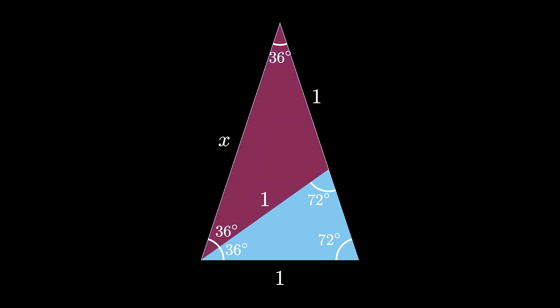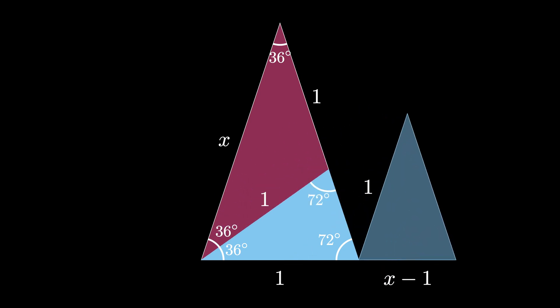Putting these two results together, we see that the base angle on the blue shaded triangle is x minus 1. Because the original triangle and the blue shaded triangle have the same three angle measurements, they are similar triangles. That means the ratios of corresponding sides are equal, so that we conclude that x divided by 1 must be equal to 1 divided by x minus 1.